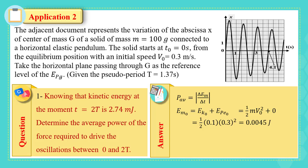Now the average power is the absolute of the difference between the mechanical energy at 2T and the mechanical energy at 0 seconds over delta T. The mechanical energy at the second period is given as 2.74 times 10 exponent minus 3 joules, giving the result in Watts.